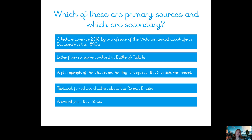Have a look at these different primary and secondary sources and see if you can sort them. You've got a copy of this in your work pack — next to each one you can write a P or an S, or you can cut them out and stick them into your book in different groups. Pause the video here and sort them into primary sources and secondary sources.